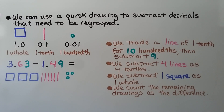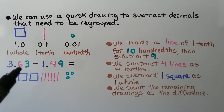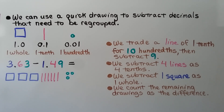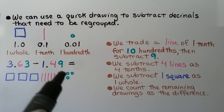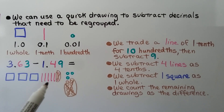We can use a quick drawing to subtract decimals that need to be regrouped. We use a square for one whole, a line for a tenth, and a little circle for a hundredth. We have 3 and 63 hundredths minus 1 and 49 hundredths. We draw 3 squares, 6 lines, and 3 circles to represent the minuend. We trade a line of 1 tenth for 10 hundredths so we can subtract the 9. We circle and cross it out — it becomes 10 hundredths. Now we can take away 9 hundredths.